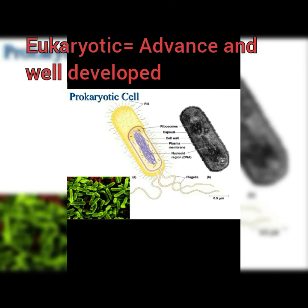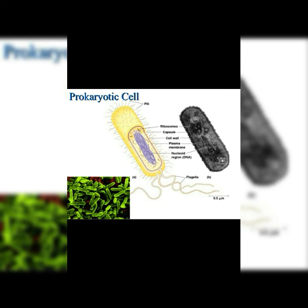You can see the prokaryotic cell structure shown here — a bacterial cell is shown. You can see ribosome, capsule, cell wall, and plasma membrane, but cellular organelles like mitochondria and Golgi body are not present. This type of cell is a prokaryotic cell.